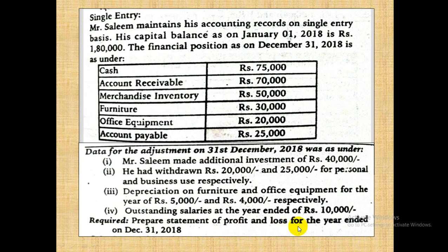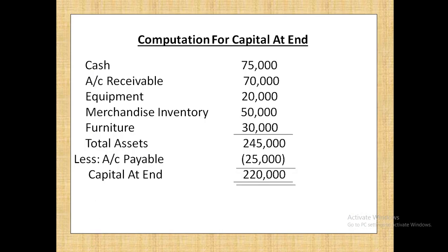Filhaal sirf requirement hai profit and loss ki — year end pe humein banani hai. So let's see. Capital at end humein sabse pehle calculate karna parega; uske bagair hum profit and loss nahin bana sakte. Capital at end ke liye year end ke assets mein se year end ki liability ko minus karein. Year end ke assets ka total aa gaya, liability ek hai, usse minus kiya — capital at end hum ne calculate kar liya.